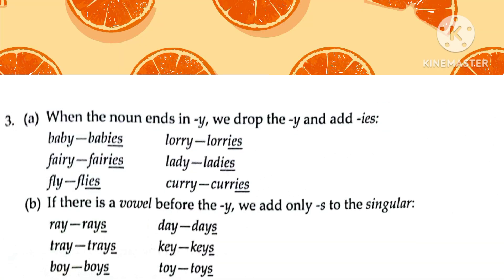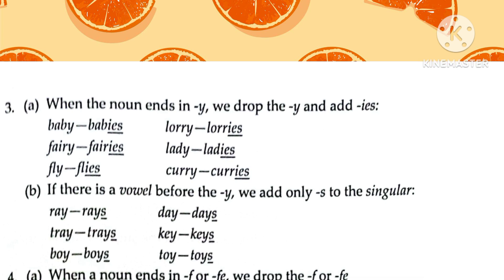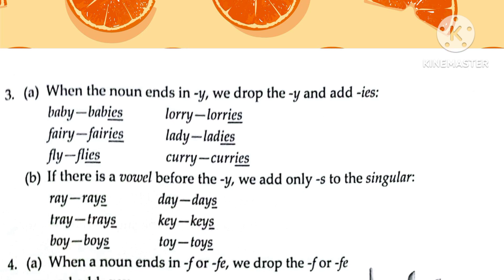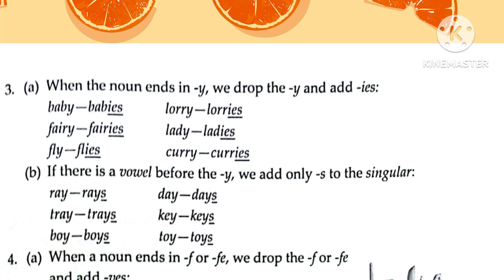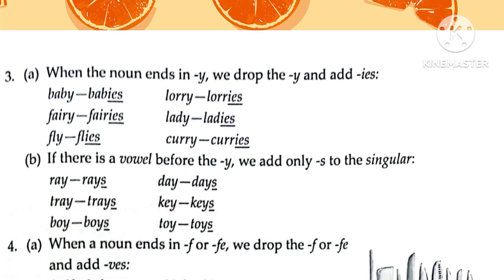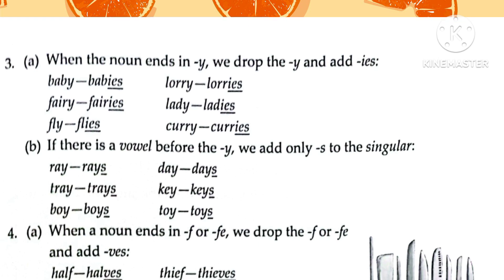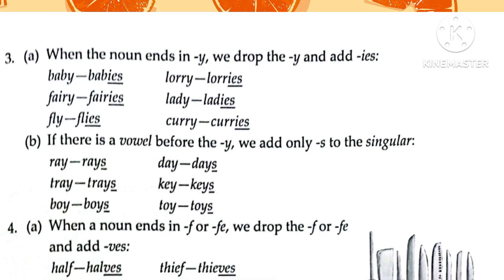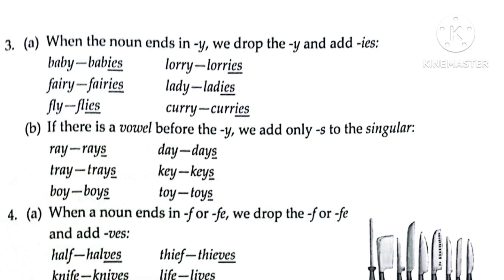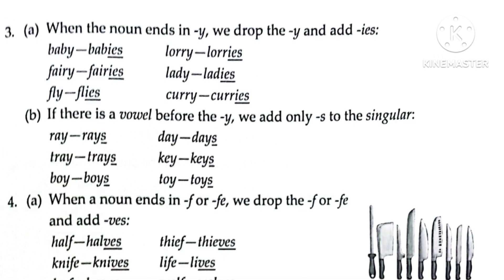Rule three, part A: when a noun ends in Y and there is a consonant before the Y, we drop the Y and add IES. Examples: baby → babies, lorry → lorries, fairy → fairies, lady → ladies, fly → flies, curry → curries. In all these words we can see that Y is dropped and IES is added to form the plural.